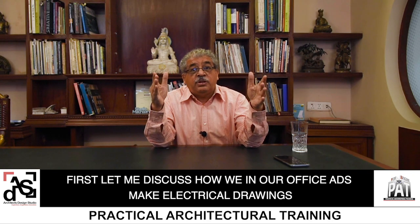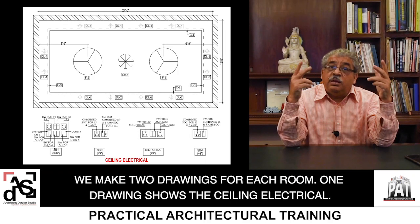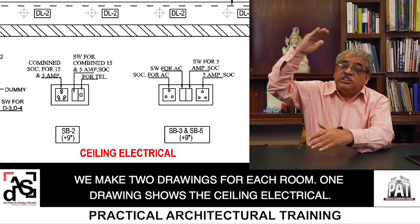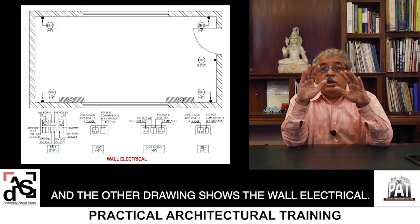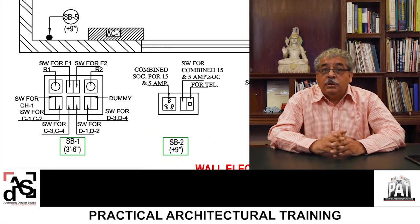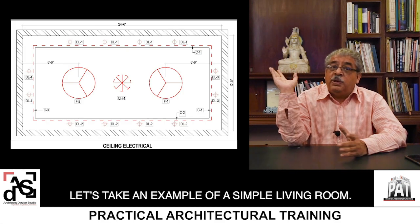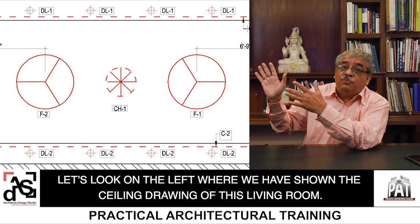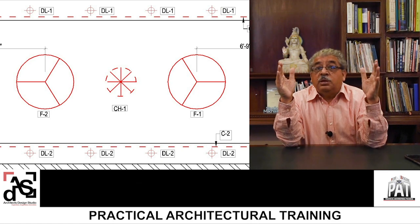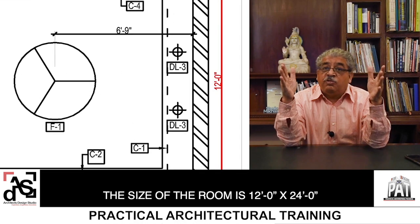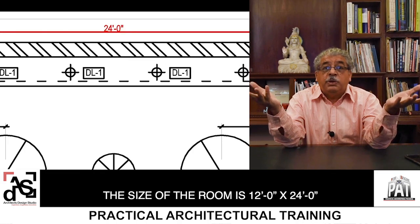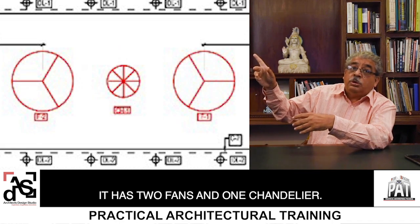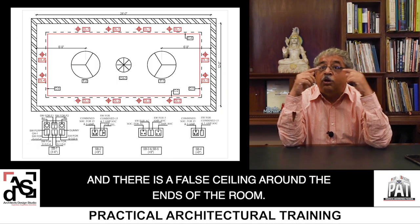We make two drawings for each room. One drawing shows the ceiling electrical and the other drawing shows the wall electrical. Let's take an example of a simple living room. Looking at the ceiling drawing of this living room on the left - the size is 12 feet by 24 feet. It has two fans and one chandelier, and there is a false ceiling all around the ends of the room.